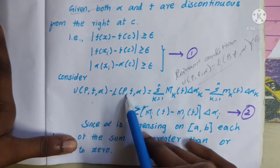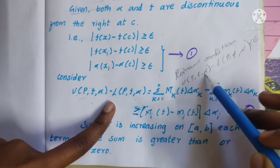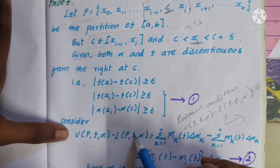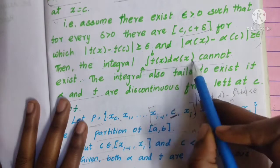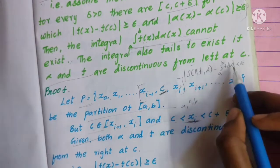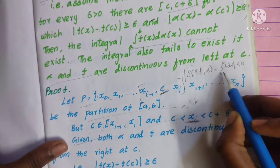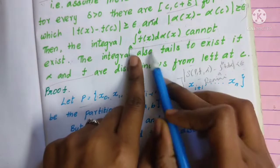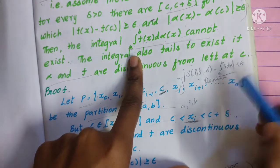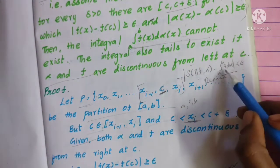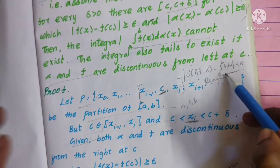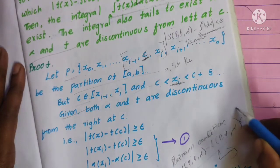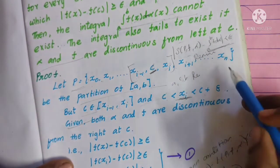Consider U(P, f, α) - L(P, f, α). This is the Riemann condition: U(P, f, α) - L(P, f, α) < epsilon. Why do we consider the Riemann condition? Because we want to show the integral ∫_a^b f(x) dα(x) cannot exist. In the Riemann-Stieltjes definition, |S(P, f, α) - ∫_a^b f dα| < epsilon. We use the Riemann condition because if the integral does not exist, this condition cannot be satisfied.